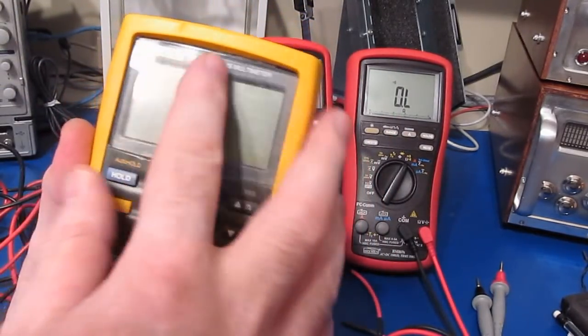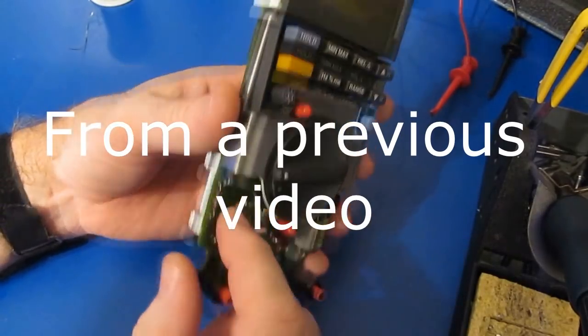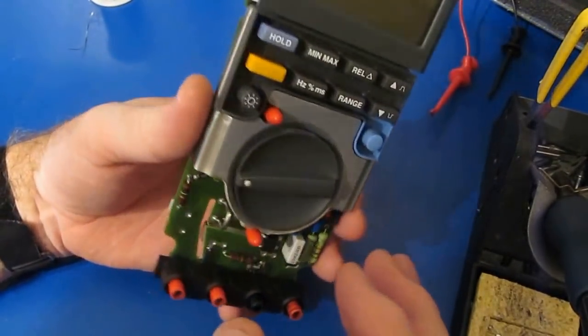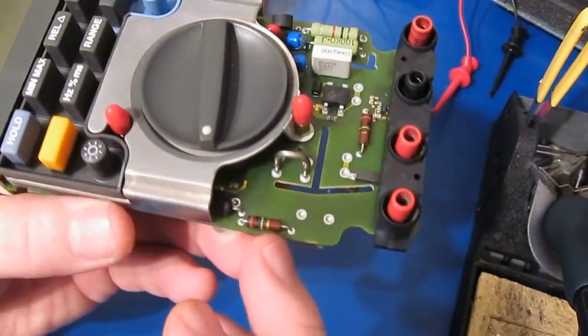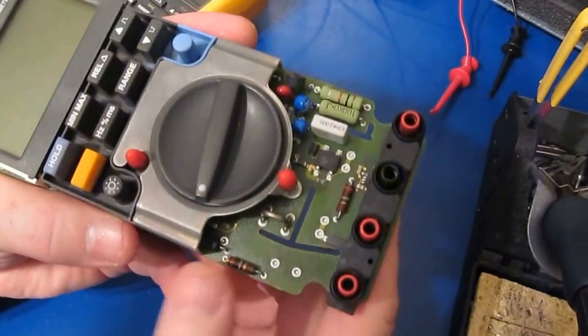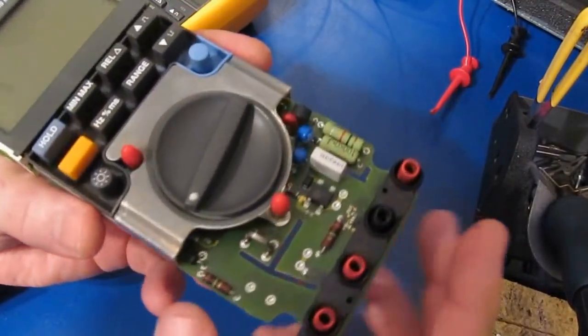So in a previous video I showed this Fluke 189. One of the tests that I didn't perform was where I removed the two fuses and then I applied the 2,000 volts. I had mentioned that the reason I didn't perform that test is because the wattage rating of these two resistors I'm afraid is just too low and I would probably just damage these two resistors.